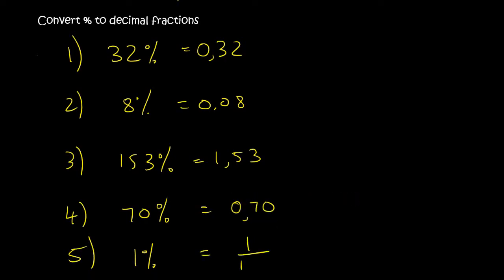1%: step one, 1 over 100. The decimal is currently over there, so you move it twice: 1, 2. And so that will give you 0,01. Let me go through that again — I rushed that part. So the comma is over there, then there's an open space, then there's a 1. You fill in a zero in the open space, and then if there's nothing in the front, you should always put a zero.